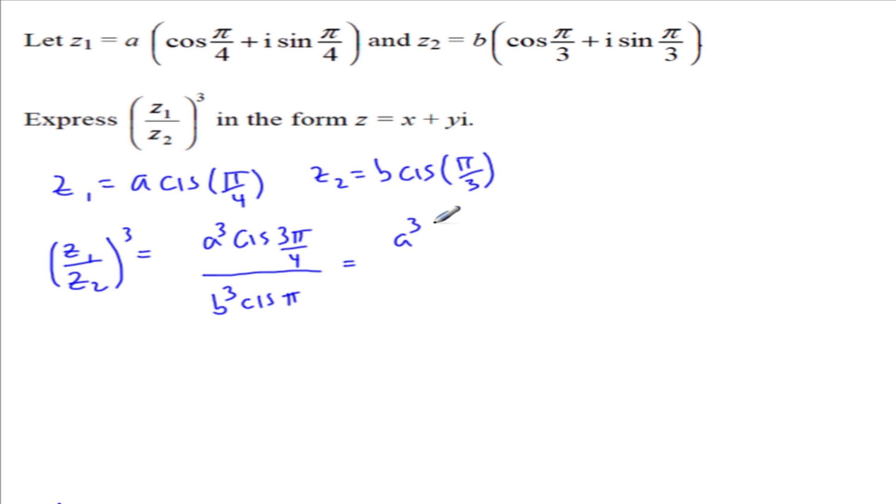So this is A cubed, parentheses, cosine of 3 pi over 4 is negative 1 over root 2, plus I sine of 3 pi over 4, which is 1 over root 2.